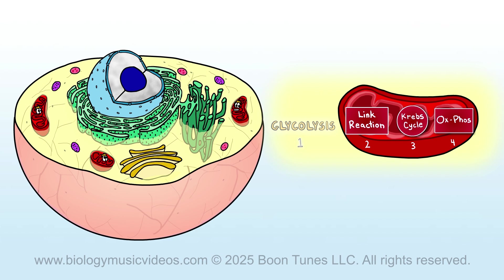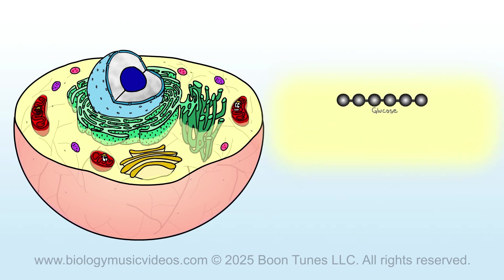Stage one is called glycolysis. The cytosol accomplishes this. It splits glucose, which generates two three-carbon compounds called pyruvate.